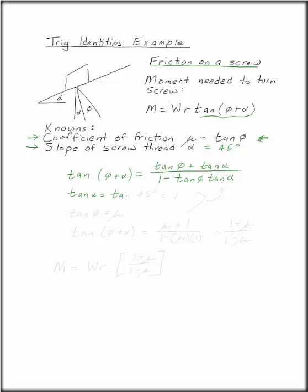Now, we know that tangent of alpha is tangent of 45 degrees, which is equal to 1. And tangent of phi is mu.